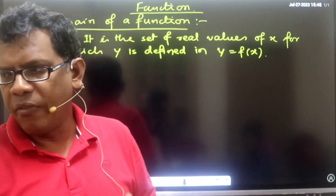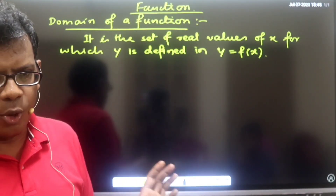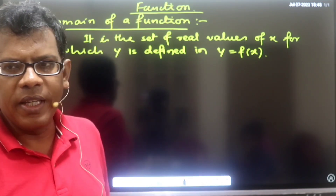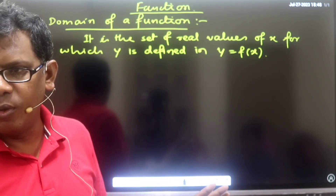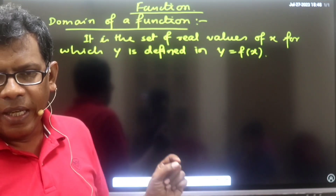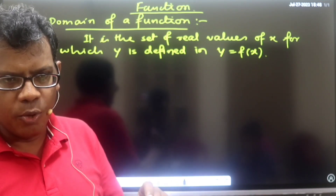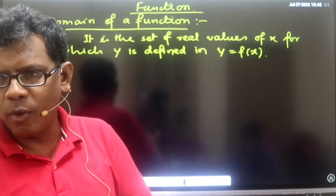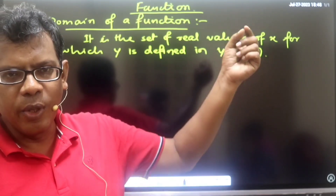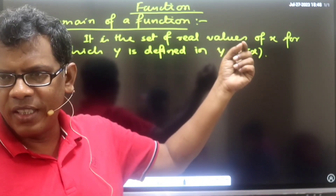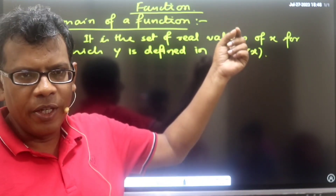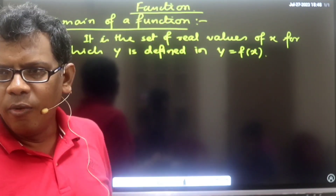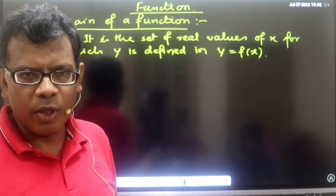If we put a definite real value of x in any given mathematical relation, then we should also get a definite real value of y. So that both x and the corresponding y are real, and their ordered pair — whether as a point in the Cartesian coordinate system — can be plotted in the first, second, third, or fourth quadrant.